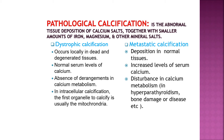Dystrophic calcification occurs locally in dead and degenerated tissue, and it occurs when serum levels of calcium are normal — there is no derangement in calcium metabolism. In intracellular calcification, the first organelle to calcify is usually the mitochondria.